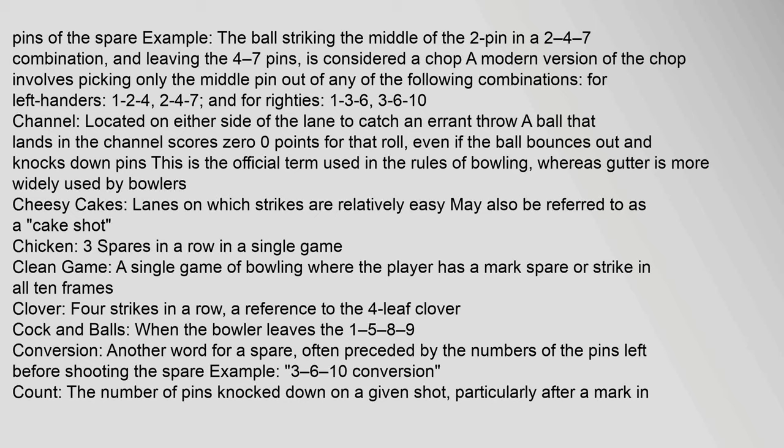A modern version of the chop involves picking only the middle pin out of combinations — for left-handers: 1-2-4, 2-4-7; for righties: 1-3-6. Channel: located on either side of the lane to catch an errant throw; a ball that lands in the channel scores zero points even if it bounces out and knocks down pins. This is the official term, whereas gutter is more widely used by bowlers. Cheesy cakes: lanes on which strikes are relatively easy; also referred to as a cake shot. Chicken: three spares in a row. Clean game: a game where the player has a mark in all 10 frames. Clover: four strikes in a row.